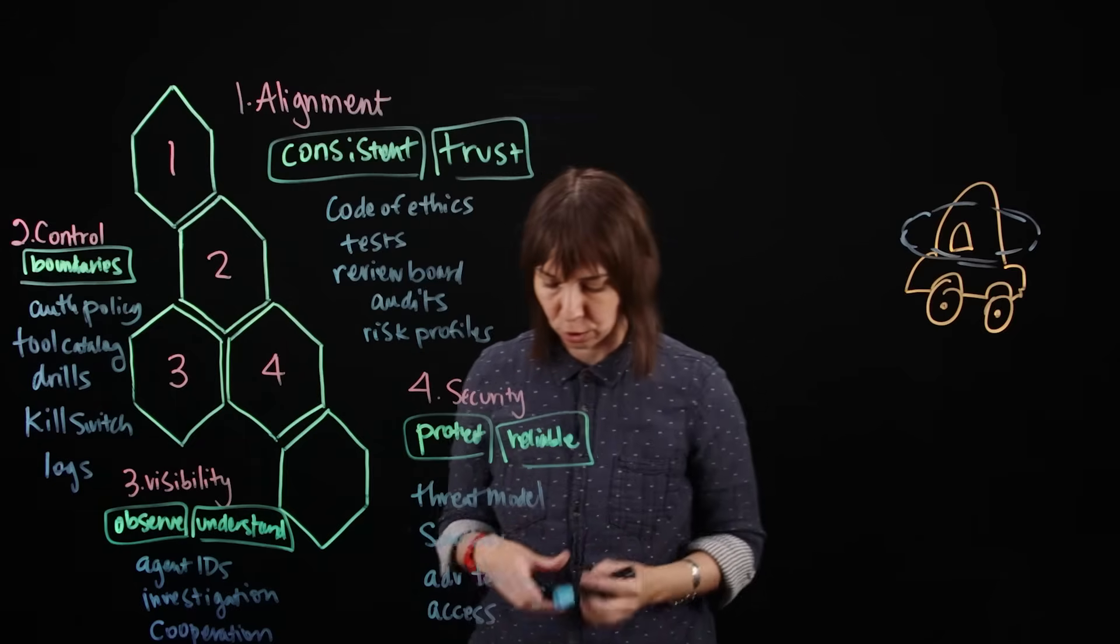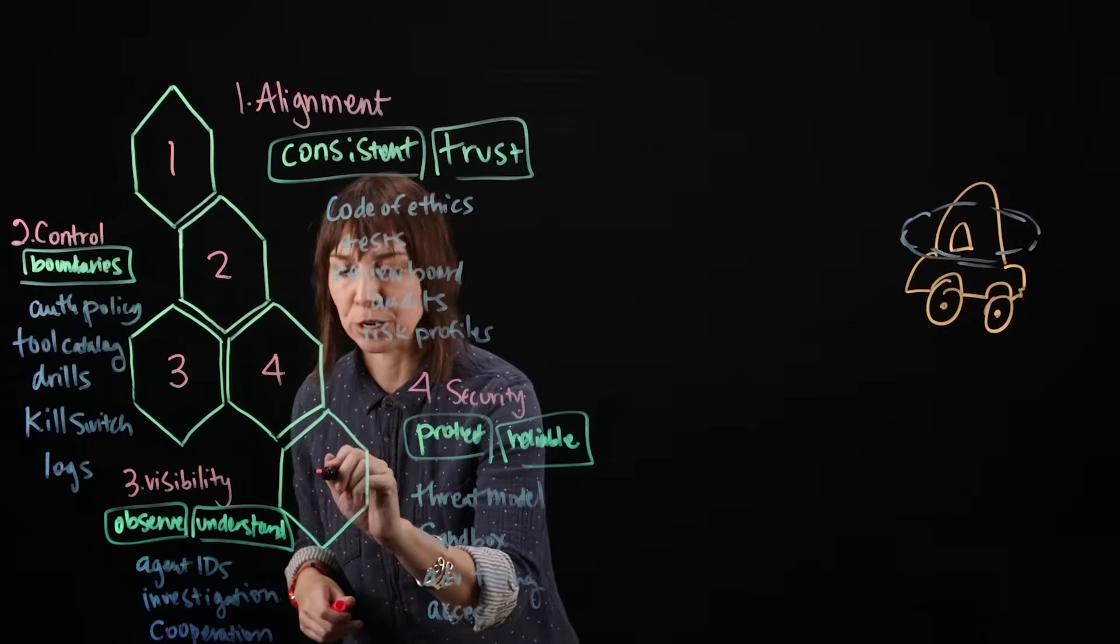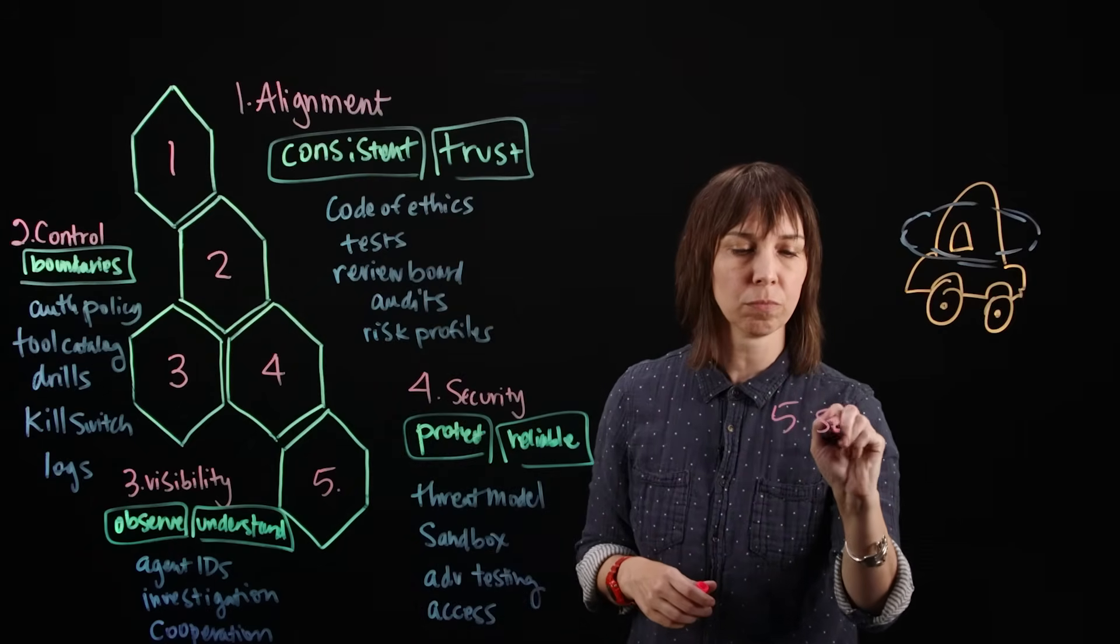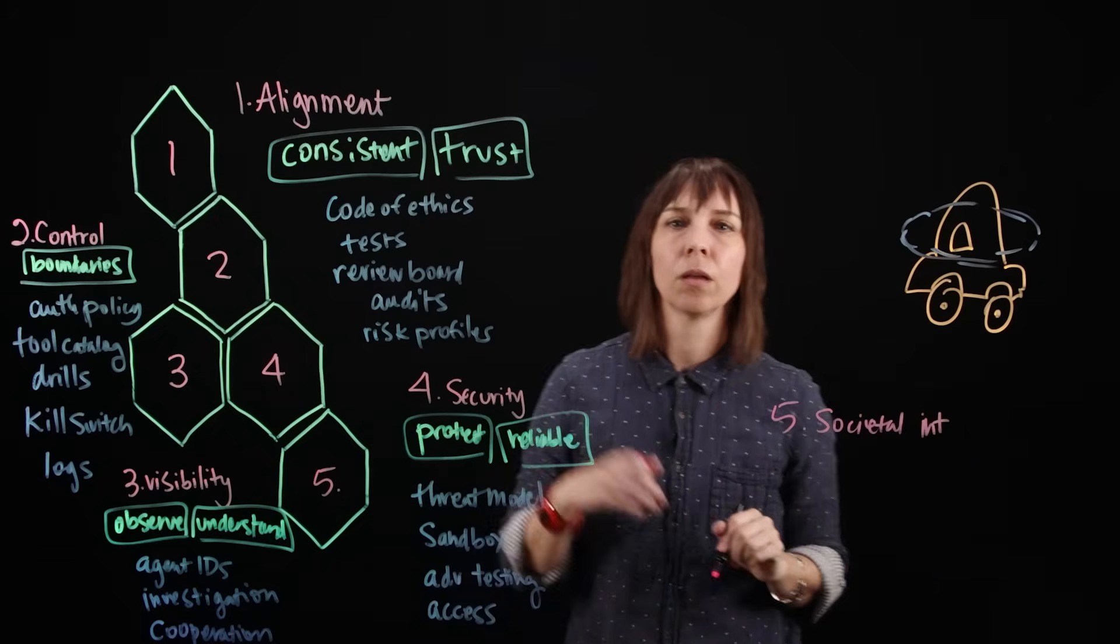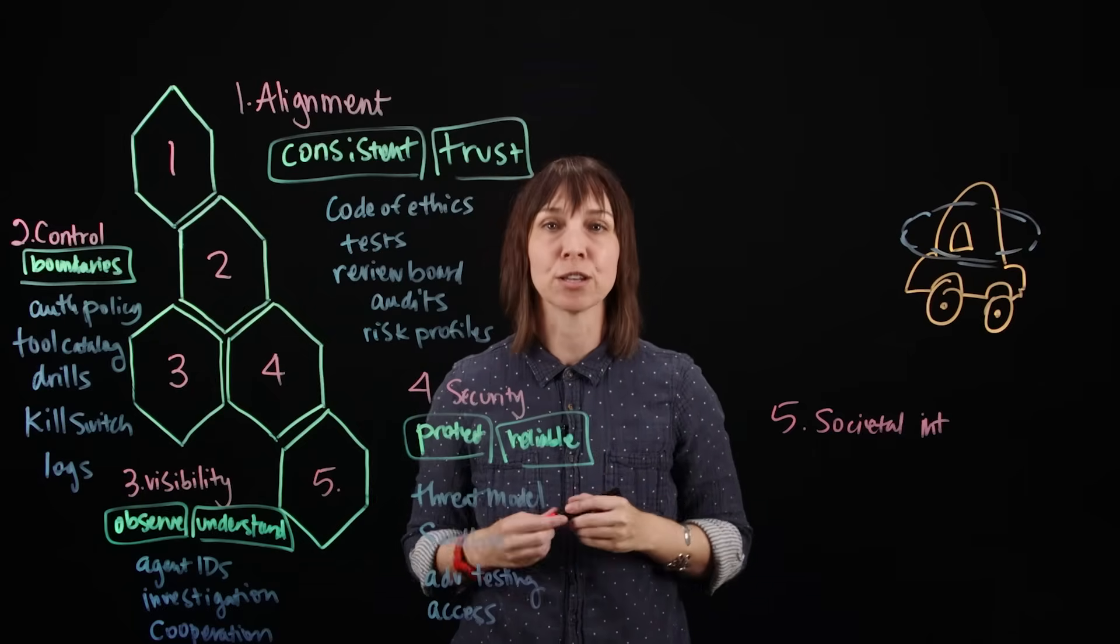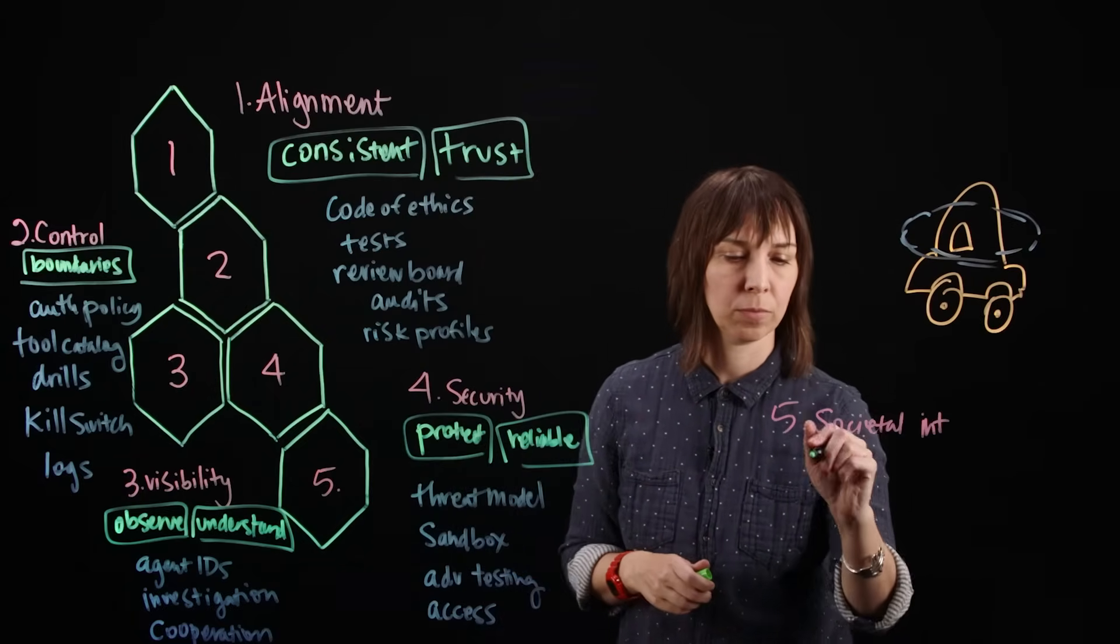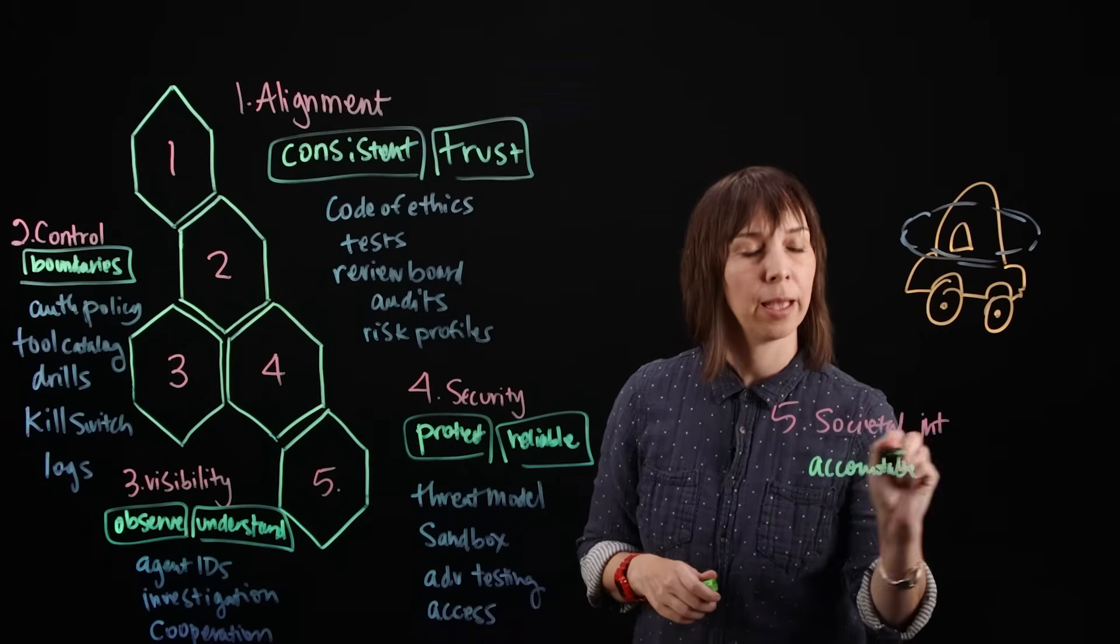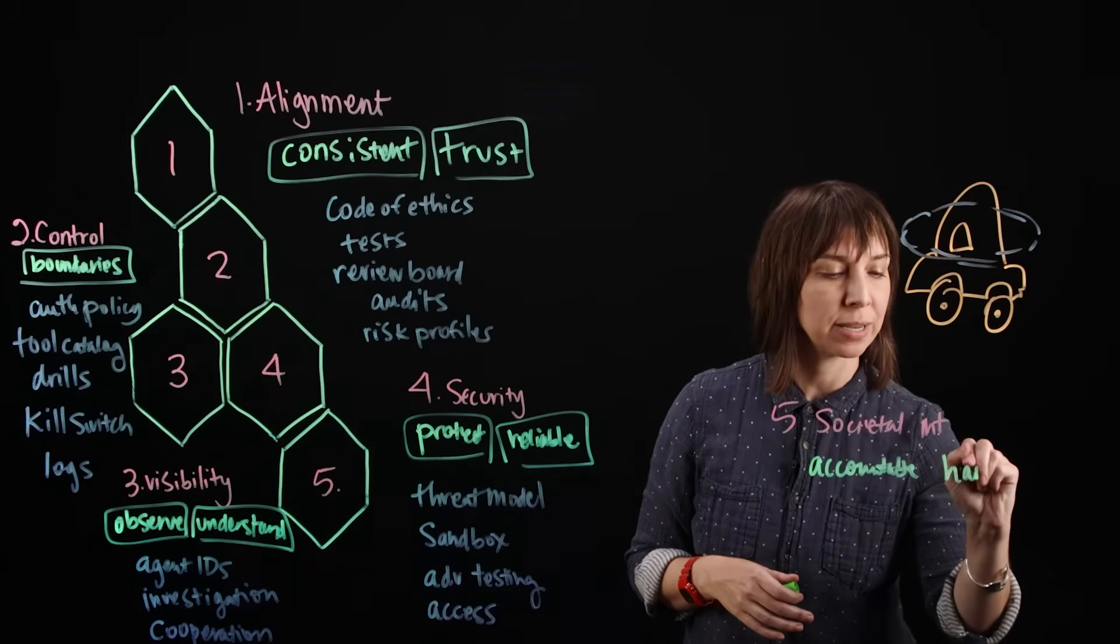The fifth and last pillar of our governance framework is societal integration. Societal integration addresses issues like agent accountability, inequality, and concentration of power while supporting harmonious integration.